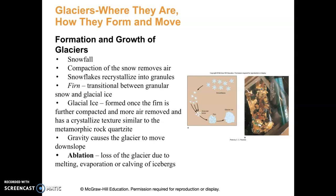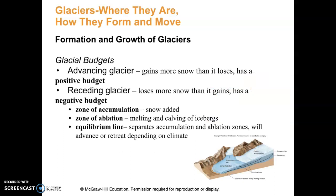The formation and growth of glaciers — think of a snowball; that gives you a good idea of what's happening, just on a much larger scale and over a longer period of time. The thing that causes a glacier to move is gravity — glaciers go downhill. A term you need to know is ablation, which is loss of a glacier due to melting, evaporation, or calving. Calving is when big chunks of ice peel off into the ocean and form icebergs. When looking at glaciers, they're either advancing or receding. An advancing glacier has a positive budget — more snow than loss — and a receding glacier is shrinking.